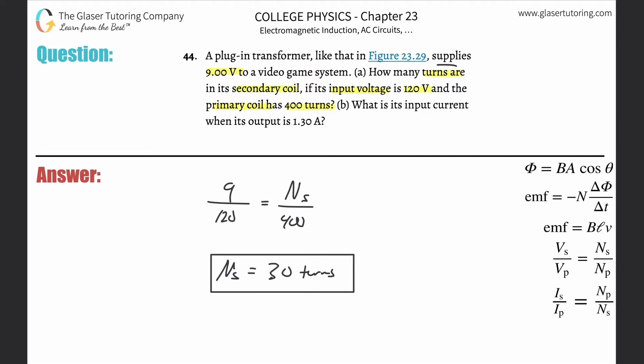Now let's take a look at letter B. It says, what is its input current when its output is 1.3 amps? So we're going to use this other formula now for transformers. It says that the secondary current divided by the primary current will be equal to the number of turns in the primary divided by the number of turns in the secondary. Just be careful because the opposites are now diagonal, or you can say that the sames are diagonal and in the prior problem, the sames were just linear. So just be careful when you do that.